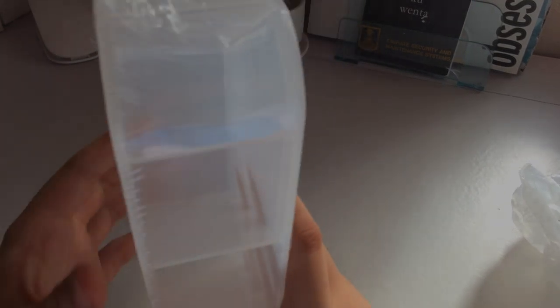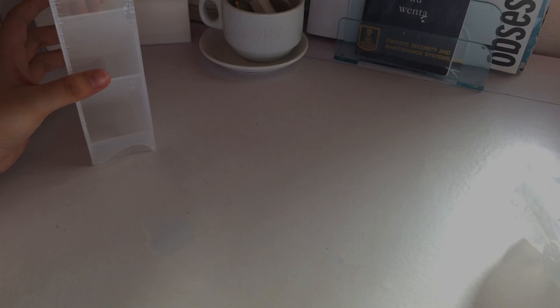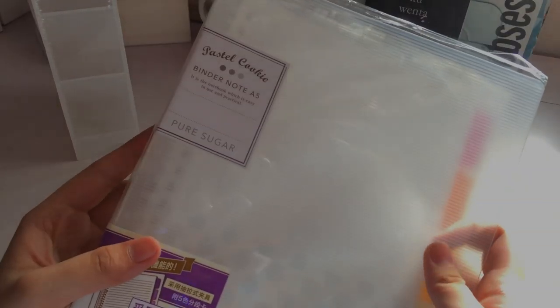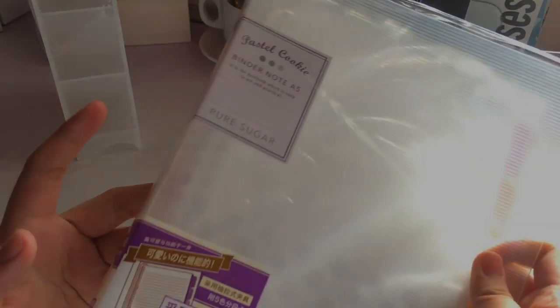The next is this one, which is the binder. Yeah, so this is the pastel cookie binder note. It's an A5, it's clear and has dividers for all the subjects that I'll be needing.